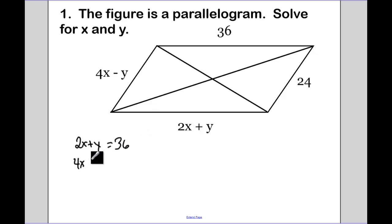And 4X minus Y equals 24, again, because the opposite sides are congruent. Now we add: 2X and 4X is 6X. The Y's cancel, equals 60. So when I divide, X is going to be equal to 10.